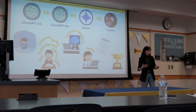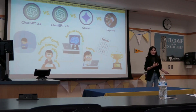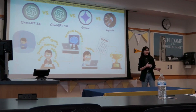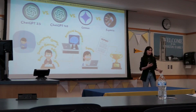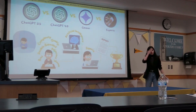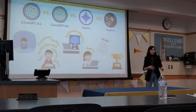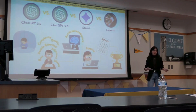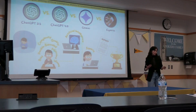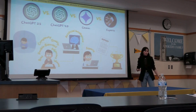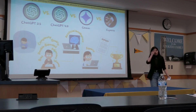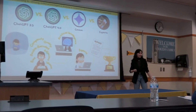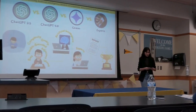The problems we're targeting include: adjacency — whether an item addresses multiple constructs; bias — whether it refers to a specific population or attribute in a stereotypical way; double-barrel — if it's asking multiple questions at once; idioms — which may not be readable for non-native English speakers; and high reading level. The typical reading level for an assessment item should be at sixth grade. We also want to assess overall item quality.